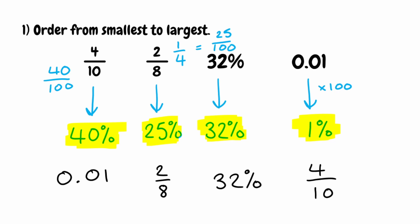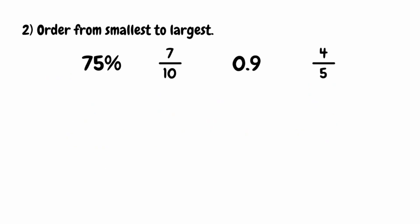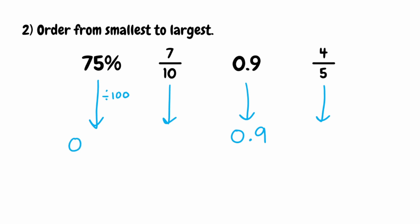Let's look at a couple more questions. Again, we want to order from smallest to largest. Instead of using fractions, I'm going to convert these all into a decimal. So 0.9 will remain as 0.9. Starting from the left, we've got 75%. To get from a percentage to a decimal, we divide by 100, moving all digits two places to the right. So that gives us 0.75.